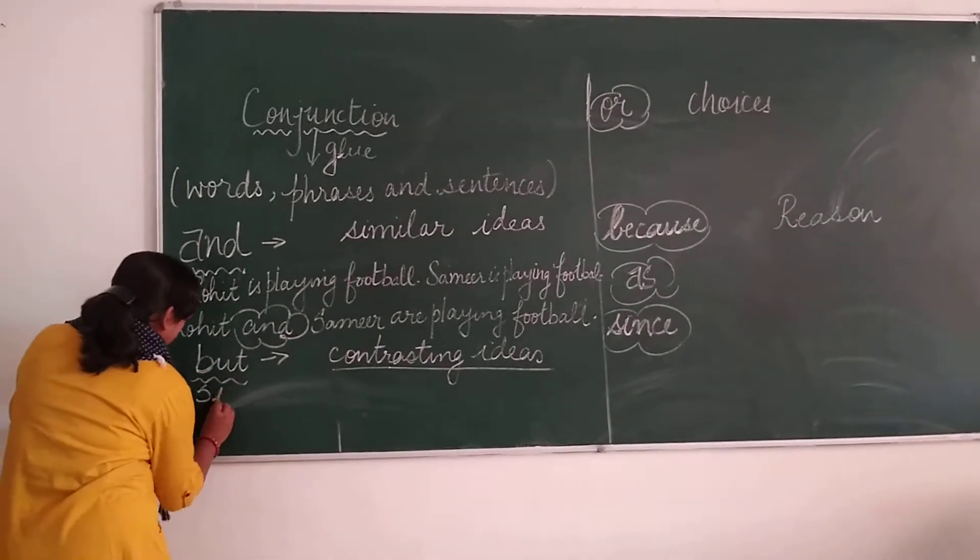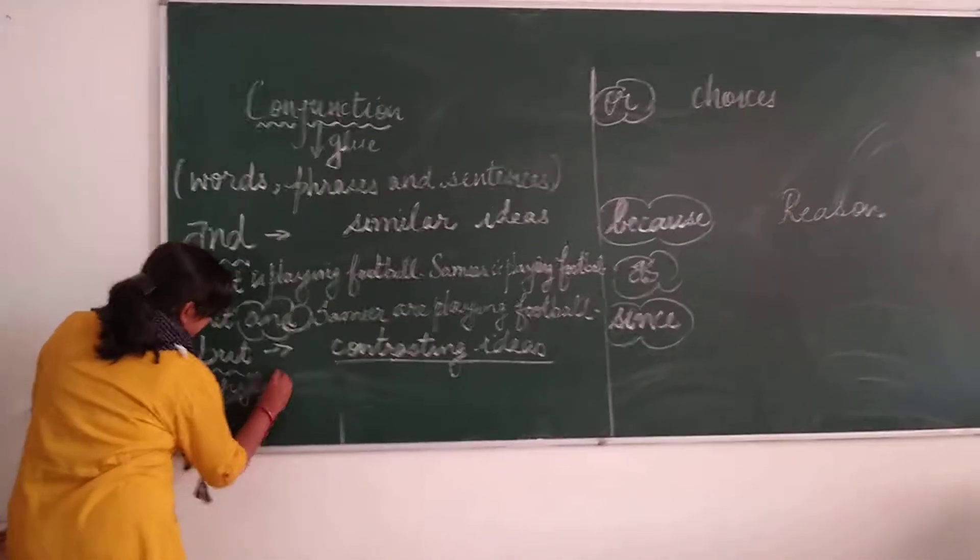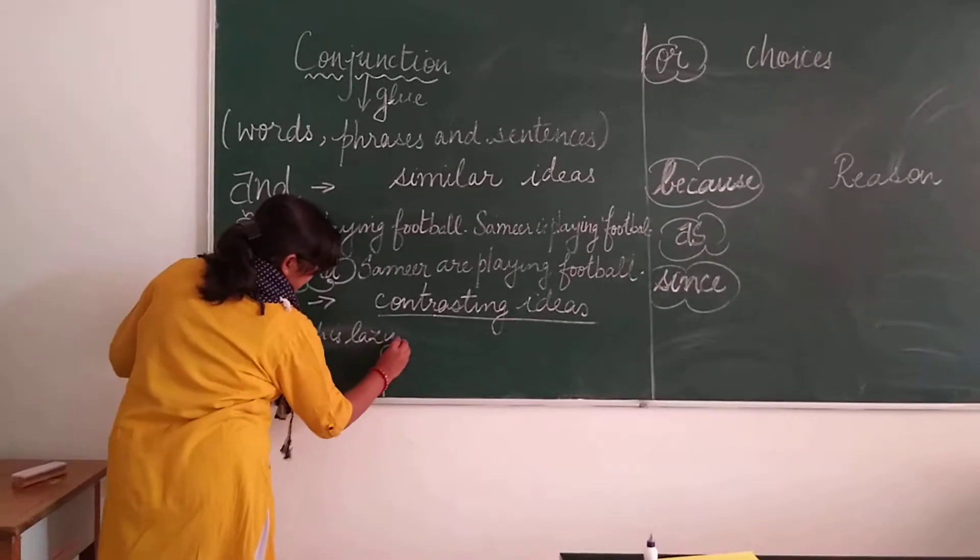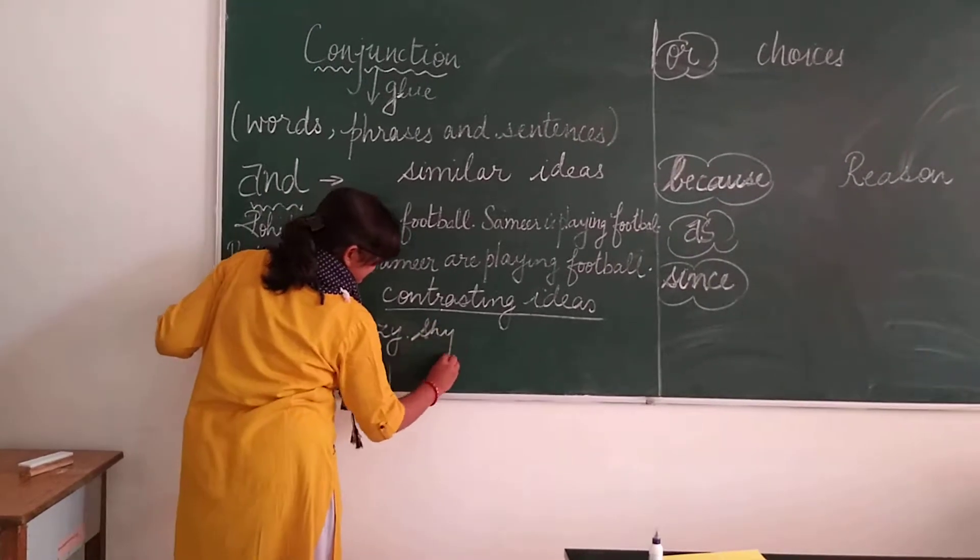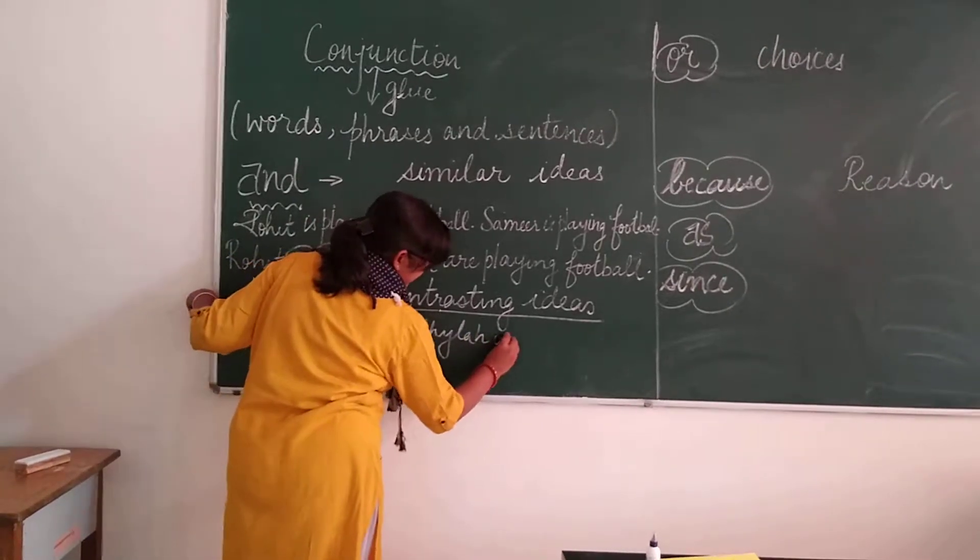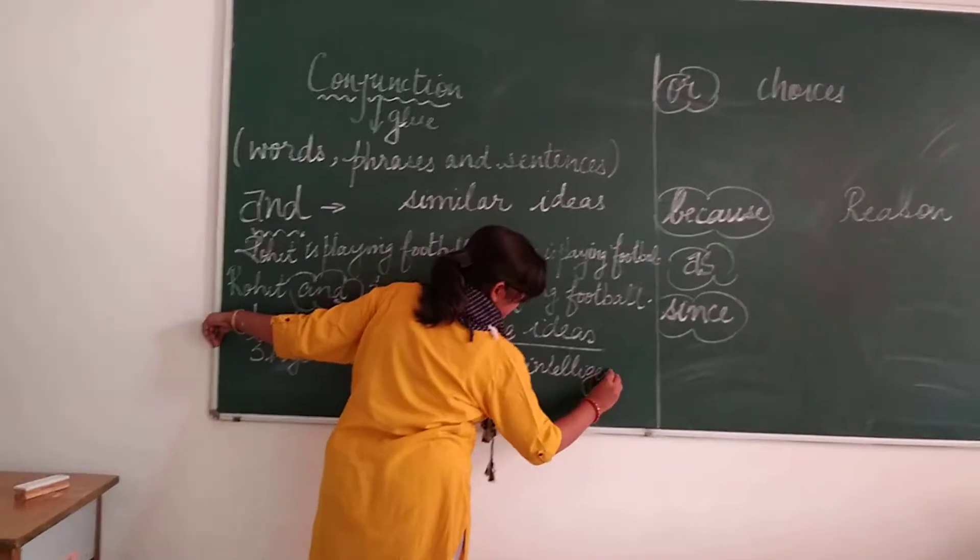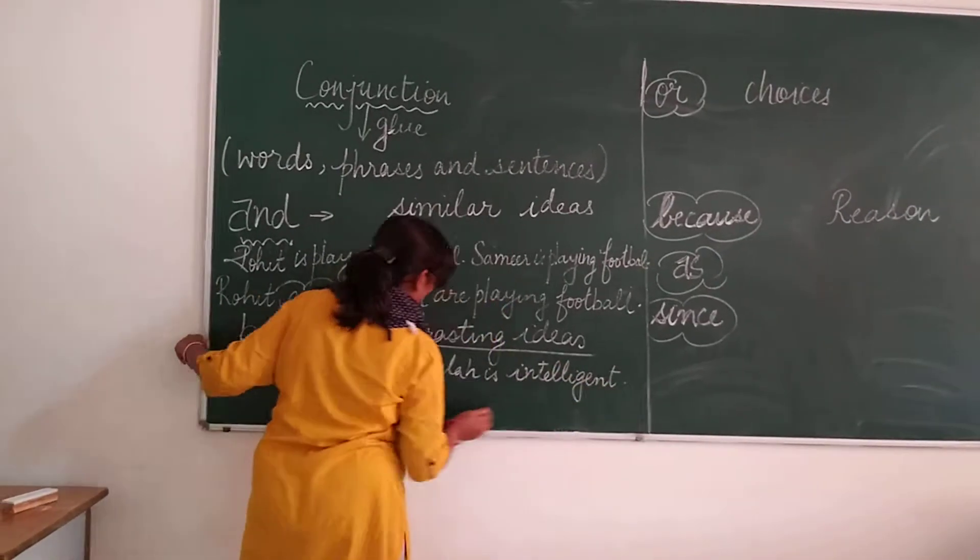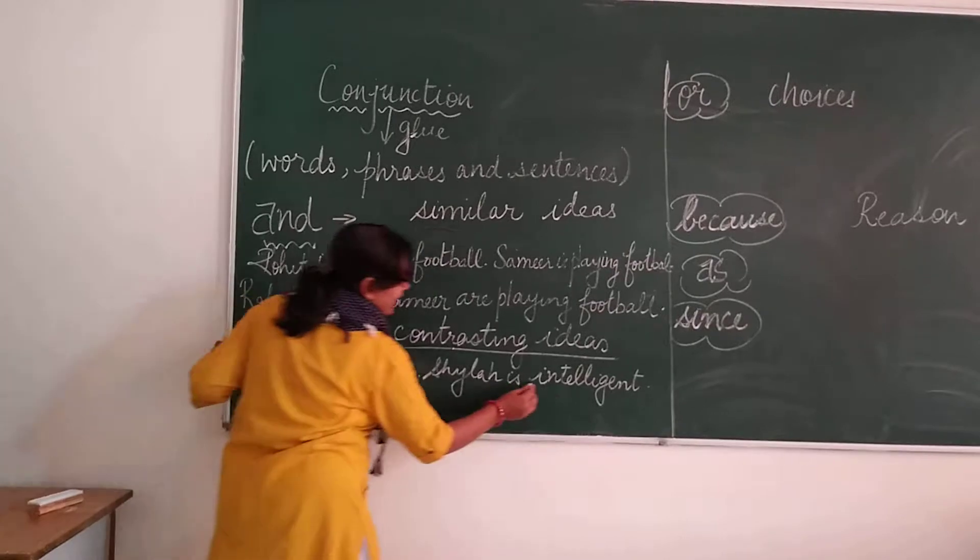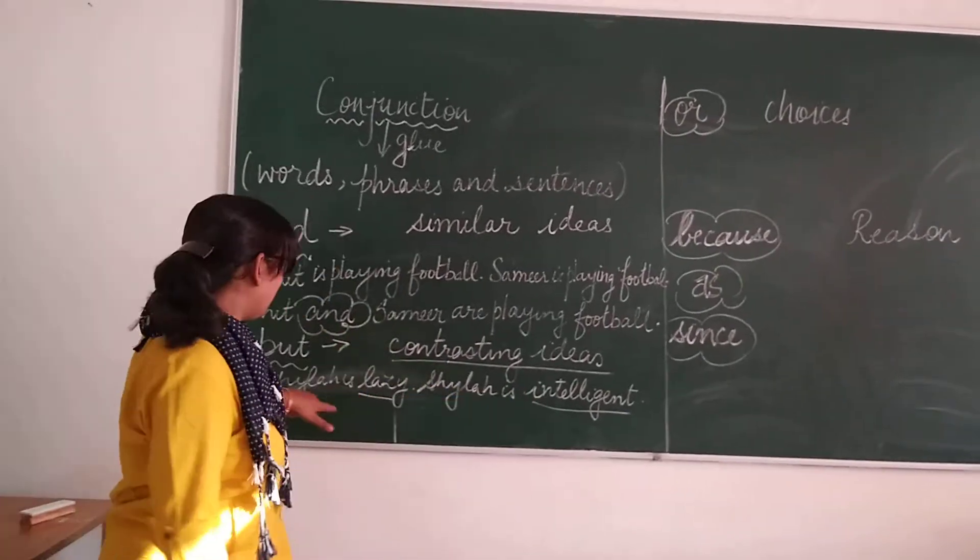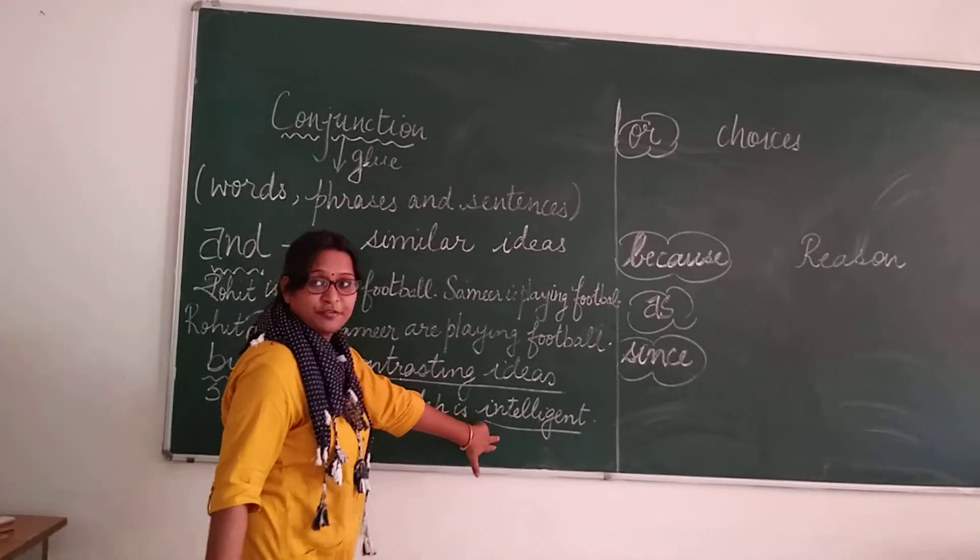Shaila is lazy. Shaila is intelligent. Two qualities of Shaila are highlighted in these two sentences, but both are contrasting or different.